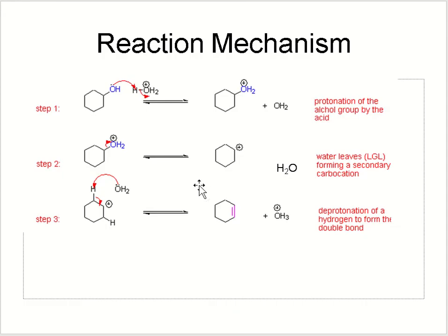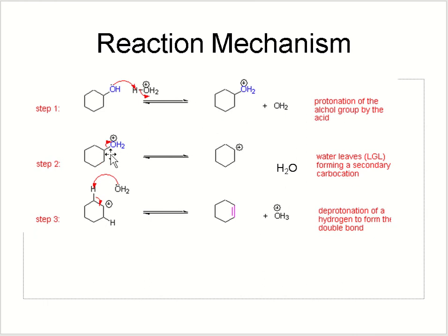There are three steps. In the first step, the hydroxyl group has a lone pair of electrons, and from the acid we get a proton (H+). The lone pair bonds to the proton, forming an OH2+ group. So the first step is protonation of the alcohol by the acid. In the second step, this protonated group leaves the molecule, forming a carbocation and releasing a water molecule.